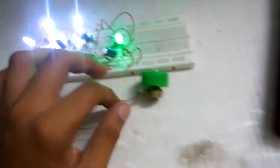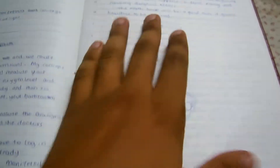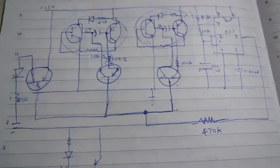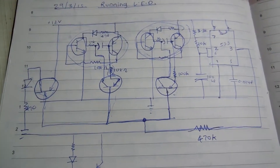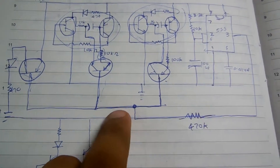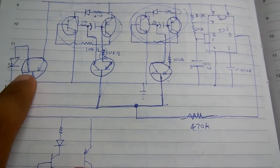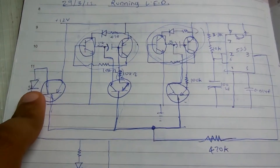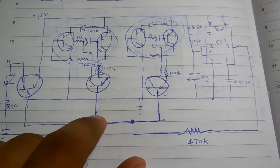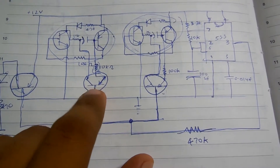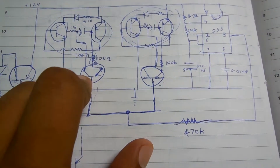Let me explain this circuit diagram to you. This is my research diary. A clock pulse goes in and it turns on this transistor, which turns on the first LED. Meanwhile, the clock pulse is also fed to this other transistor and the capacitor discharges.